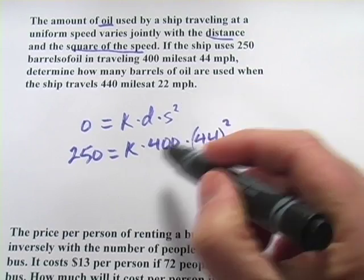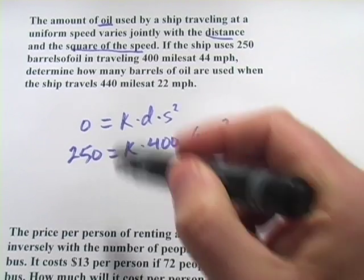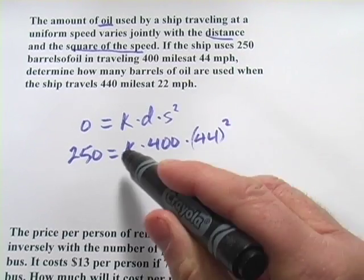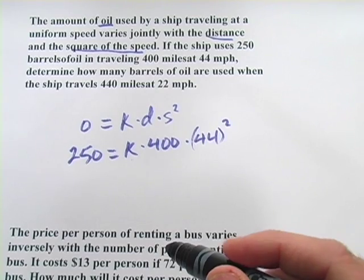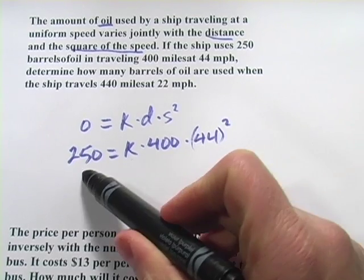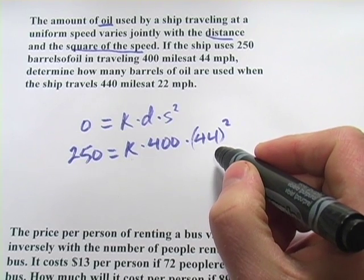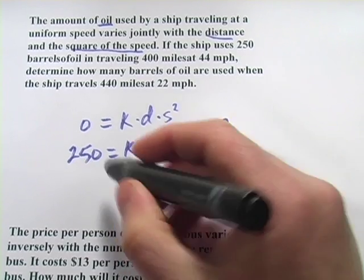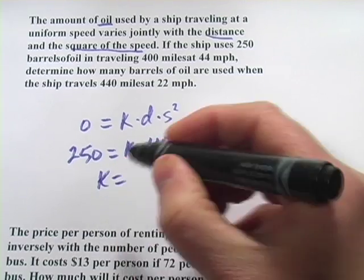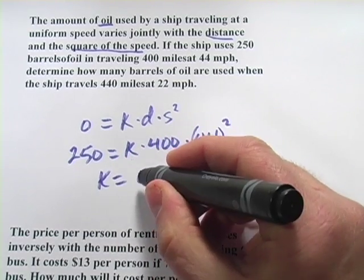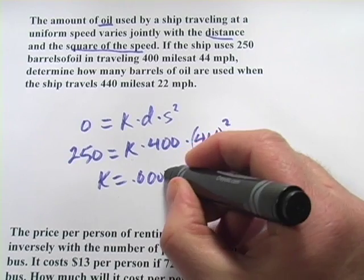It's going to ask us to determine how many barrels of oil are used with some other numbers, but let's figure out K first. So K is going to be pretty small, I think. We'll have to take 250 and divide it by 400 and divide it by the square of 44. If you punch that out on your calculator, you should get something close to .000323.